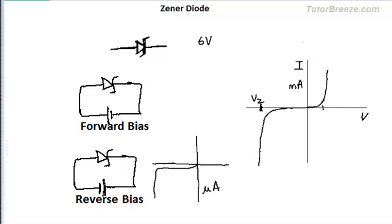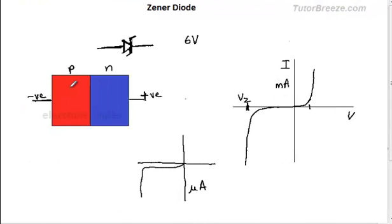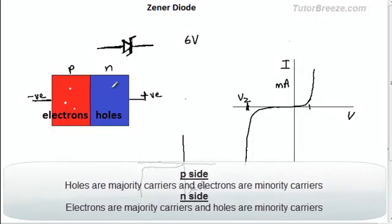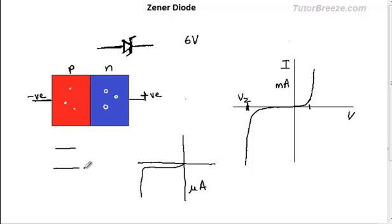Now, what do we mean by minority carriers? There is an extremely small concentration of electrons on the P side and holes on the N side. These are thermally generated minority carriers, which means if the temperature is increased, the concentration of these carriers will increase because in that case, you will have more electrons which will move from the valence band to the conduction band.